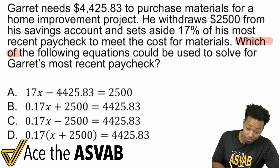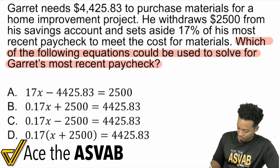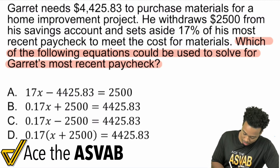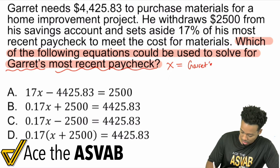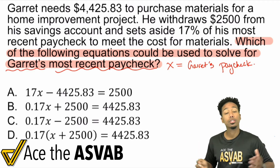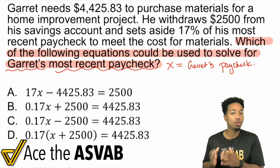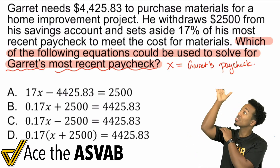The question asks: which of the following equations could be used to solve for Garrett's most recent paycheck? So x equals Garrett's most recent paycheck. Let's write that down. That's what x represents.